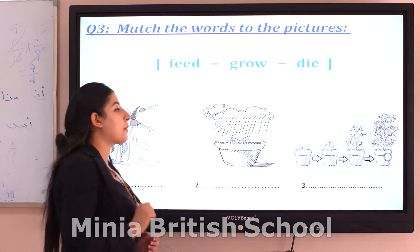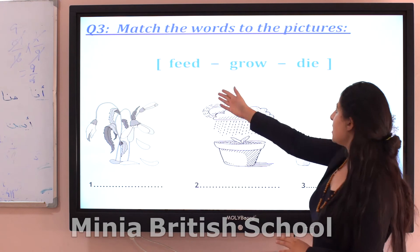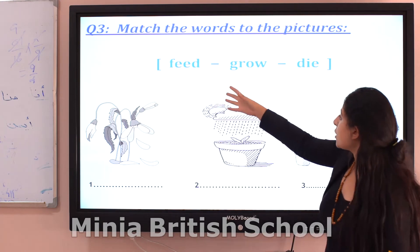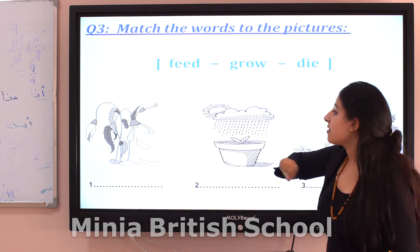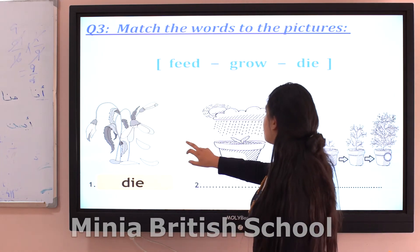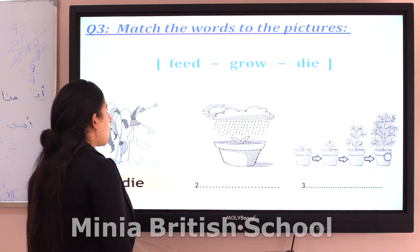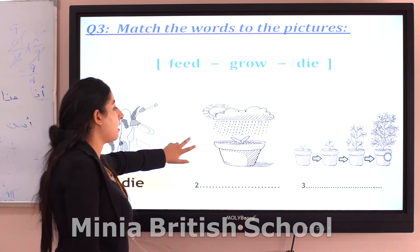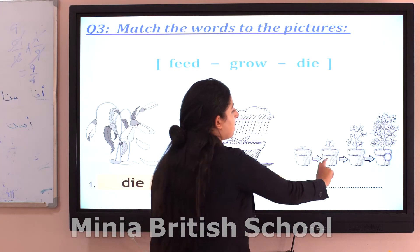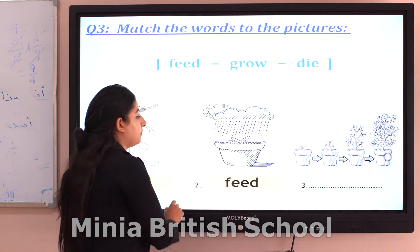Question number three. We have three pictures: feed, grow, and die. This picture means that plants can die. Second picture — this is water and this is a tiny plant — so this picture means that plants can feed. Number three: this picture means that plants can grow.